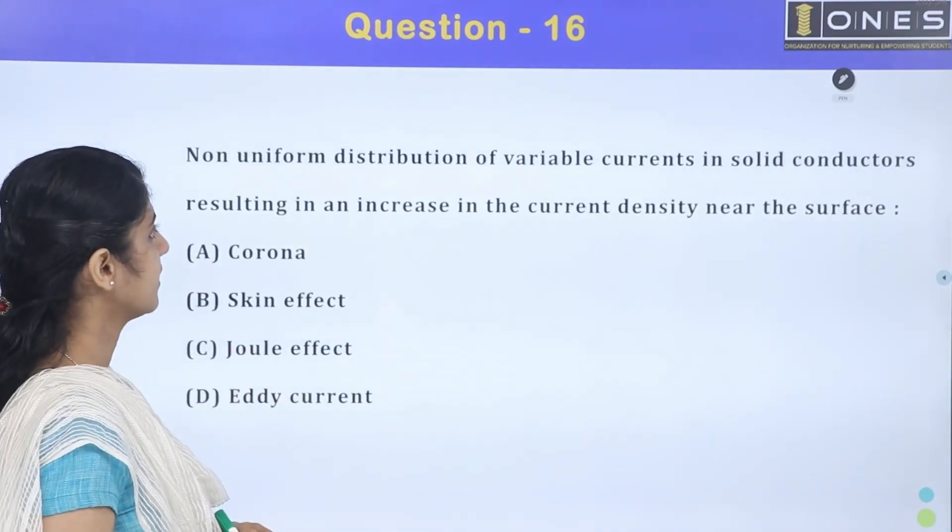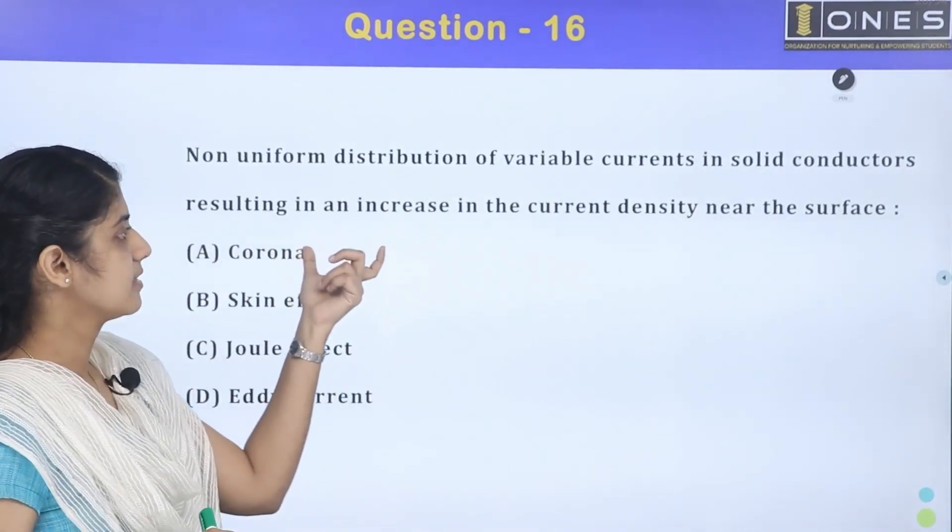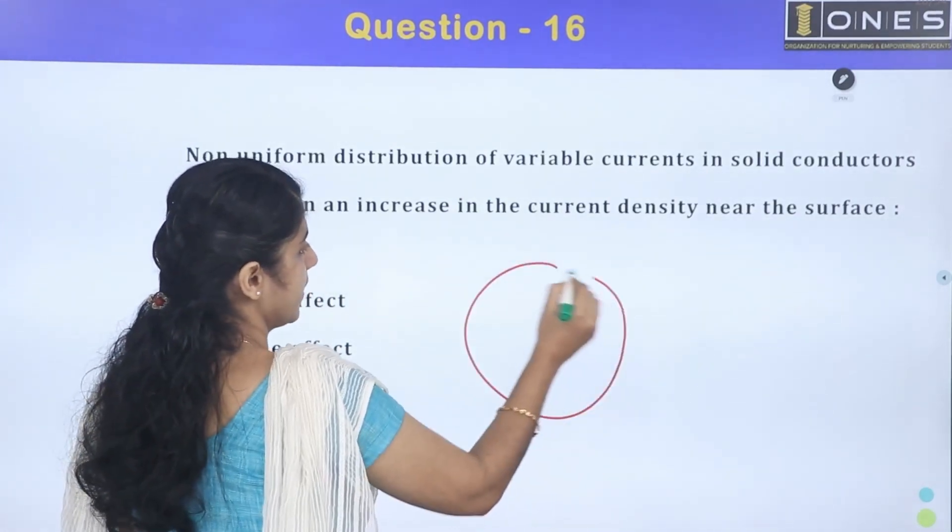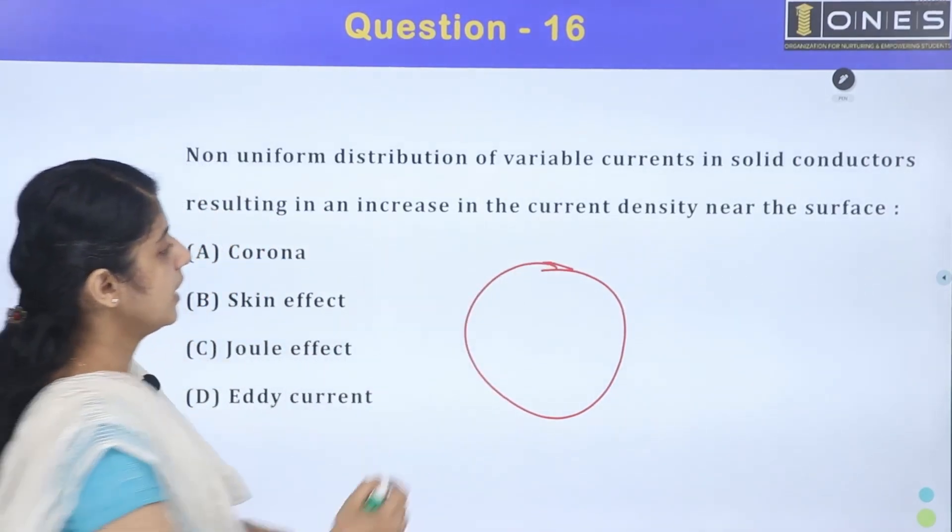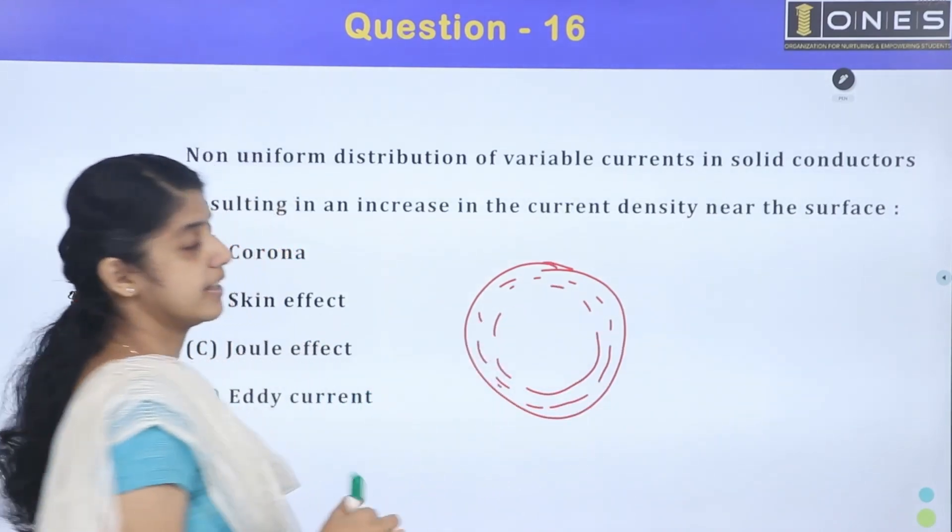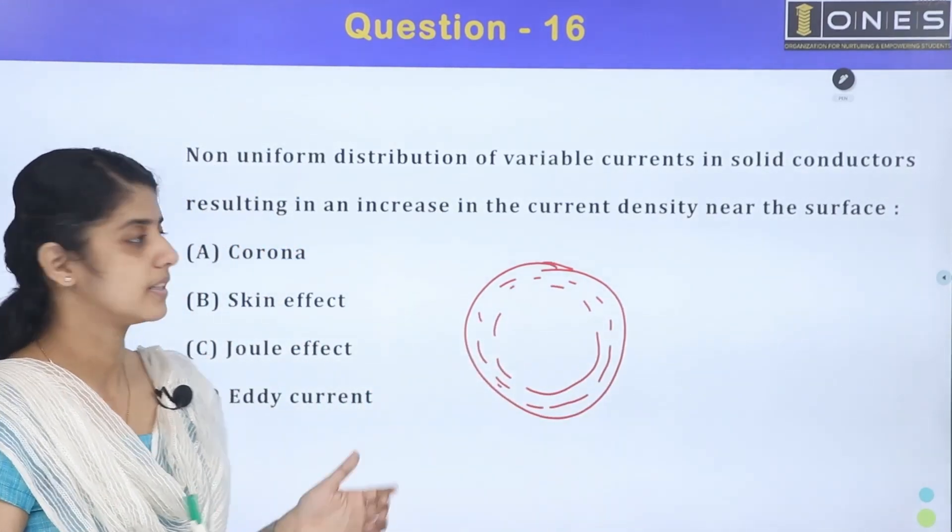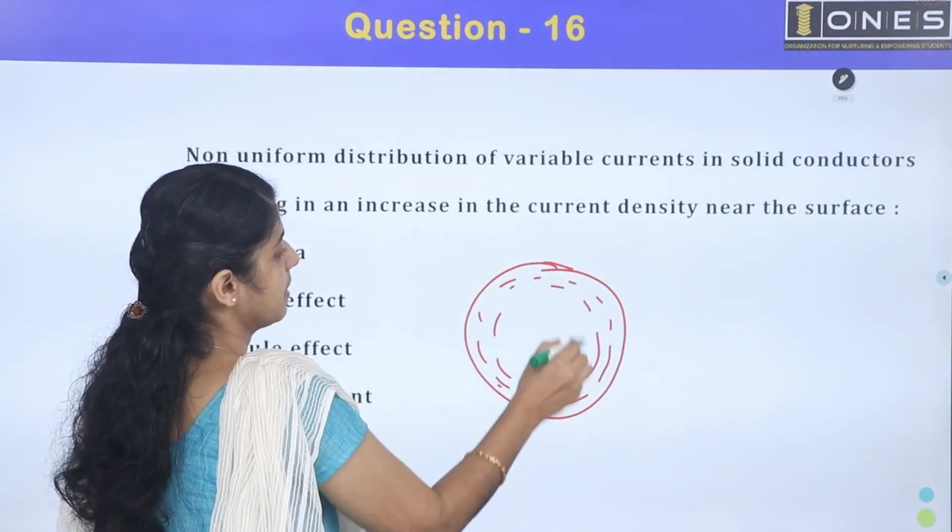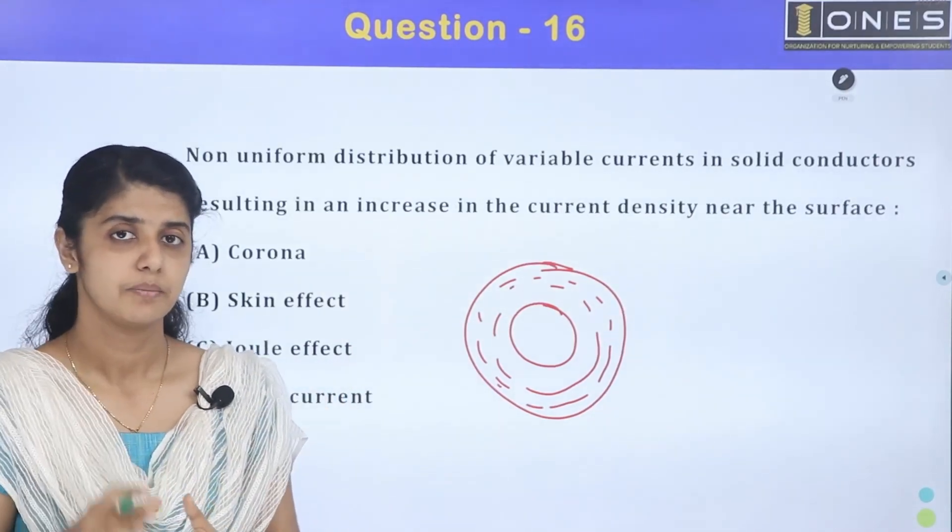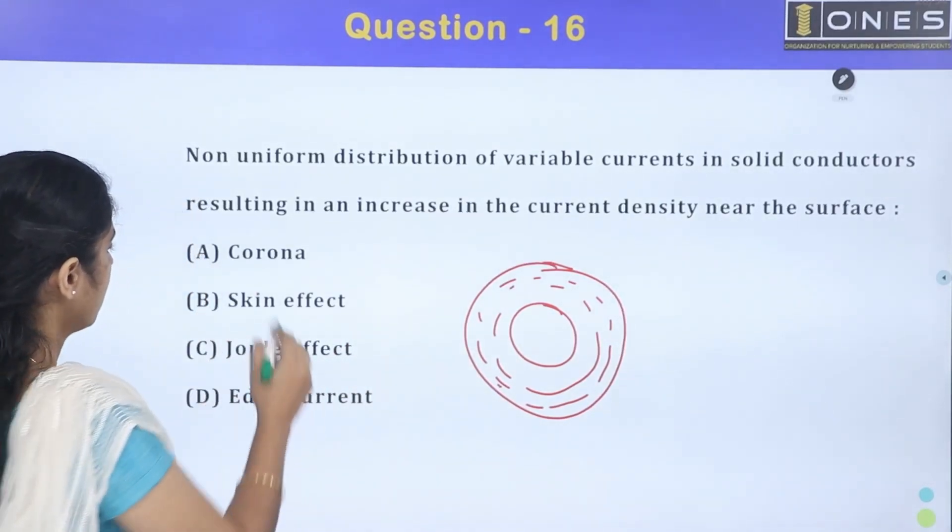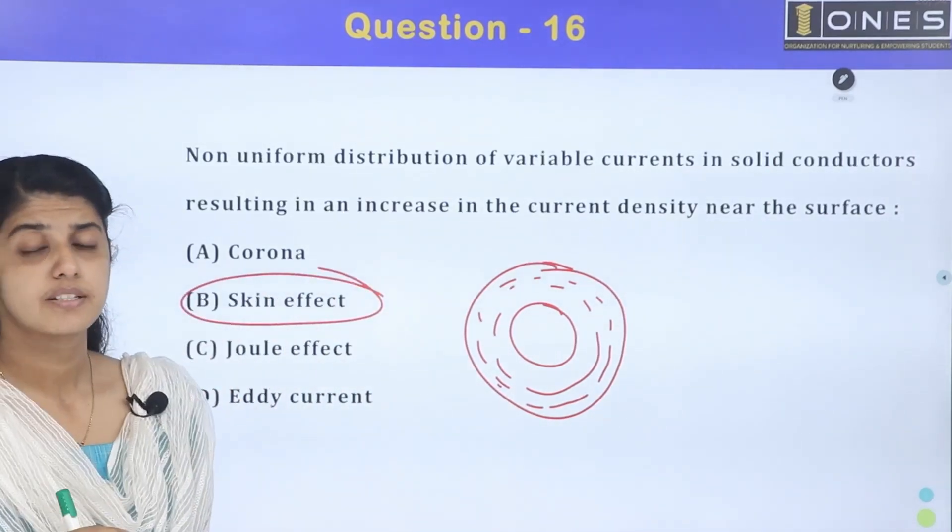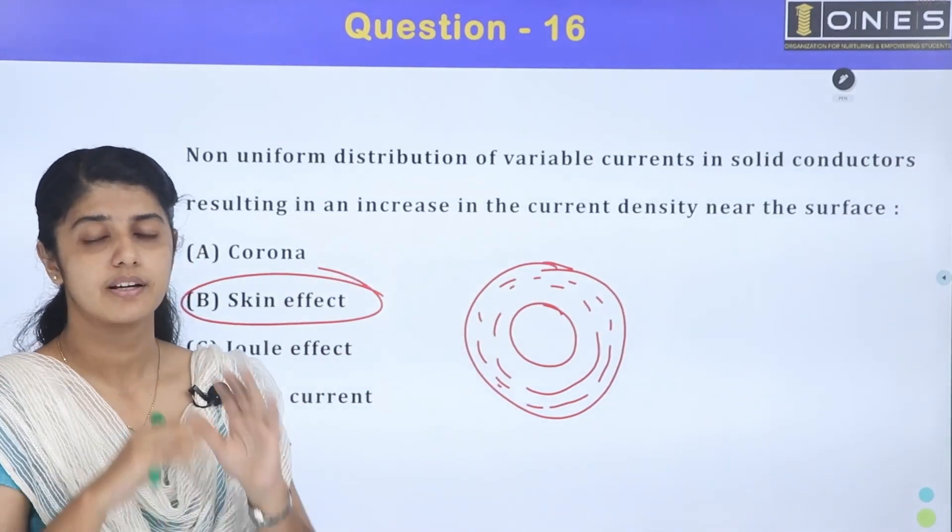This phenomenon is about solid conductors. The current is concentrated on the surface. The current density is a phenomenon. The current density can be concentrated on the conductor's surface.